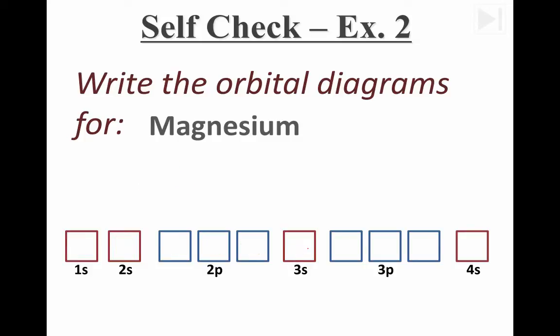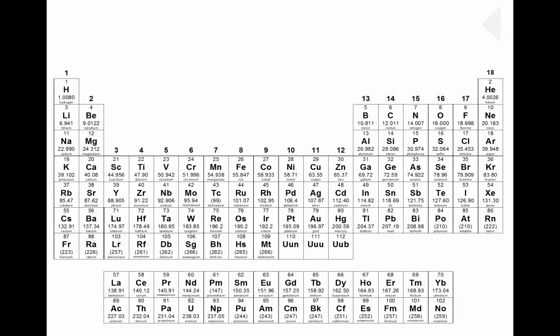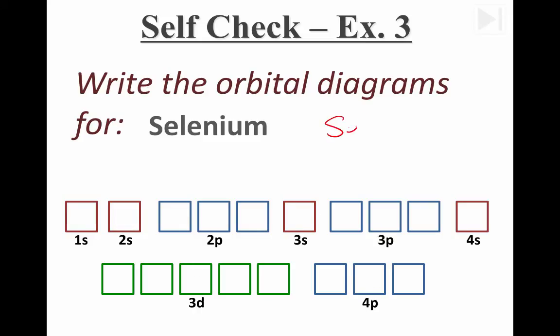Let's try one more of these orbital diagrams. This one's a little longer. This is the orbital diagram for an element called selenium. Selenium is element number 34 on the periodic table. That's a lot of electrons. Let's not complain though. At least I didn't ask you for rutherfordium.